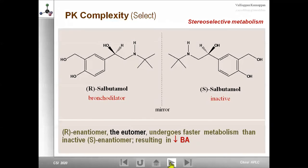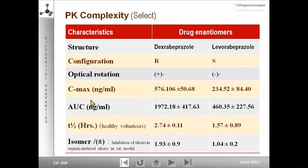For toxicity examples: drugs like terodiline, dilevalol, and prenylamine were withdrawn from the world market because of stereochemically engineered toxicity — cardiotoxicity and hepatotoxicity. The classical example is thalidomide. Thalidomide is a molecule with a chiral center and a pair of enantiomers. The R-form has the desired sedative activity, and the S-form has embryo toxicity — teratogenic effect.